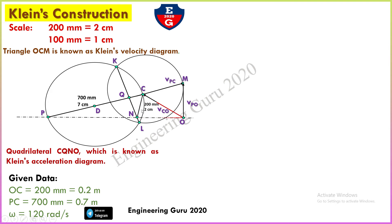Now take the center of CM — this is point D1 — and join OD1. This represents the midpoint of the velocity diagram. Similarly, draw a line parallel to OP from point D, which intersects the CN line at point D2. Join OD2. So OD1 is the midpoint line for velocity and OD2 is for acceleration.